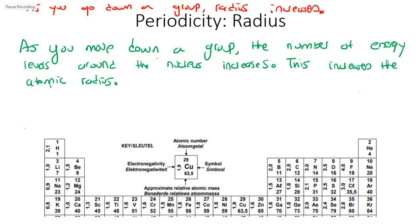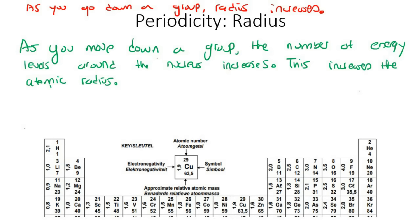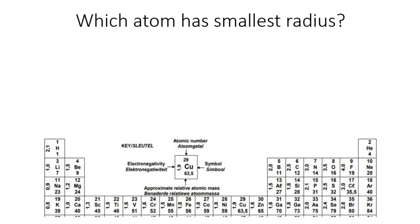Now that we have both patterns explained: when you go from left to right, the radius becomes smaller because you're adding more protons; but when you go down, the radius becomes larger because you're adding more energy levels. Let's do some examples — we're going to compare sodium and sulfur.